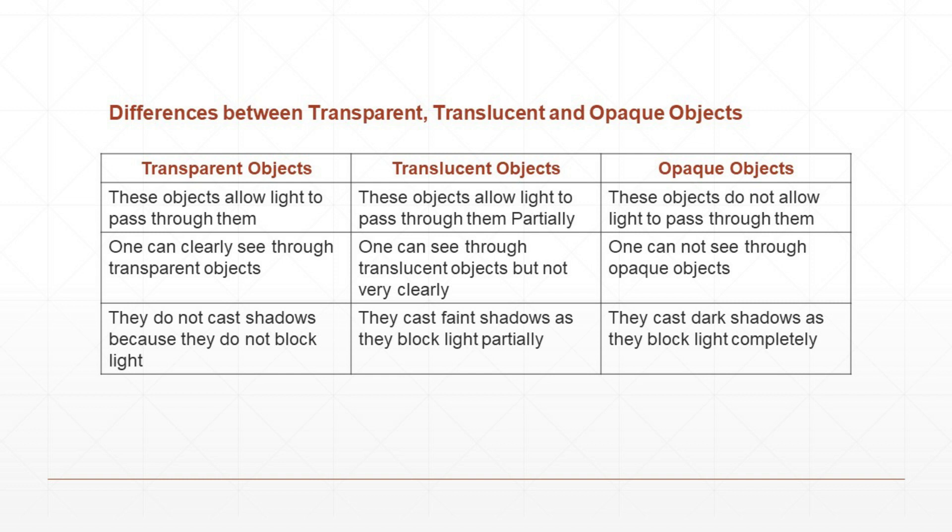To summarize: transparent objects allow light to pass through them, one can clearly see through them, and they do not cast shadows. Translucent objects allow light to pass through partially, one cannot see through them very clearly, and they cast faint shadows. Opaque objects do not allow light to pass through them, one cannot see through them, and they cast dark shadows as they block light completely.